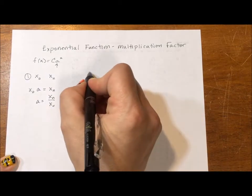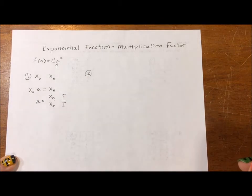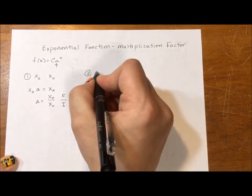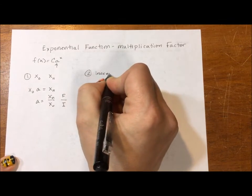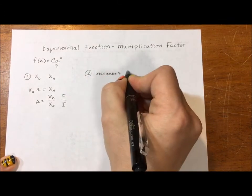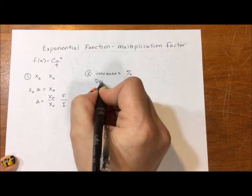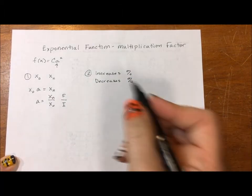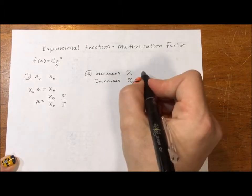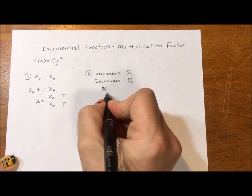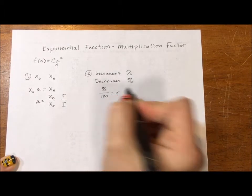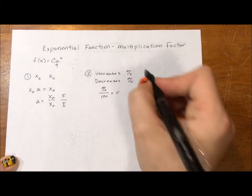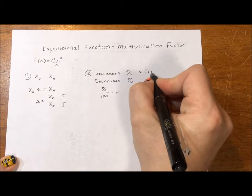The second way that you calculate a is there's a percent. The amount increases by some percent or decreases by some percent. Either way, we take the percent divided by 100 to get R, some rate in decimal form. If it increases, a is equal to one plus R.